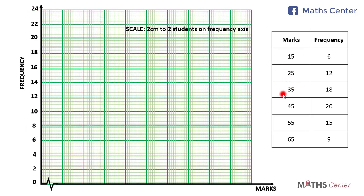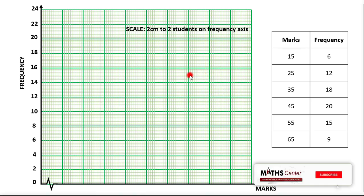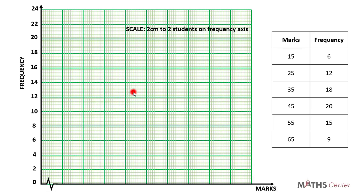From the table we have 6 different marks, so it means that we are going to have 6 different bars. We will have to choose the width of the bars. From the previous video we learned that for ungrouped data the width of the bars will be equal, so all the bars will have the same width. Looking at the number of bars and the graph sheet, I will make each bar occupy 10 minor divisions or 10 small boxes.